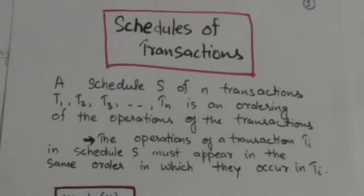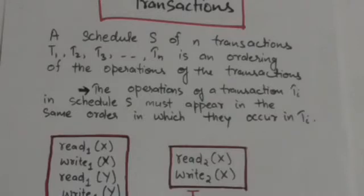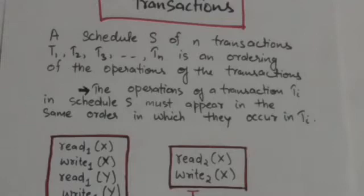Hello friends, welcome back. In this tutorial we will study about schedules of transactions. A schedule S of N transactions T1, T2, T3, up to TN is an ordering of the operations of the transactions, and operations of different transactions can be interleaved in the schedule. The operations of a transaction TI in schedule S must appear in the same order in which they occur in transaction TI.